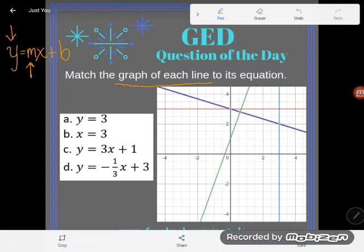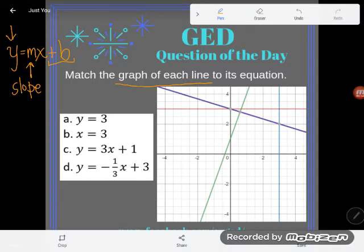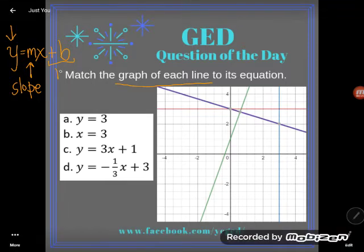Whatever number is multiplying with x, we call it the m, is the slope. We can also see the b. The b is the number that is a term that's adding or subtracting with x. And so that b stands for the y-intercept.